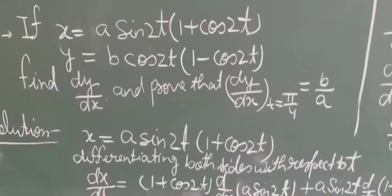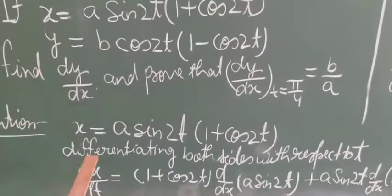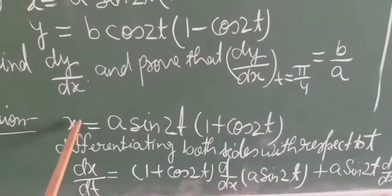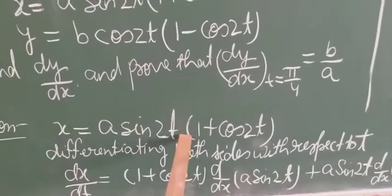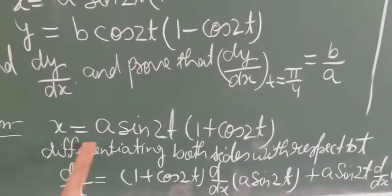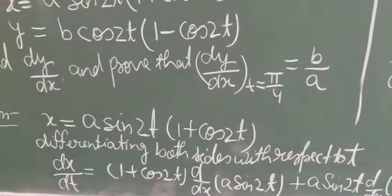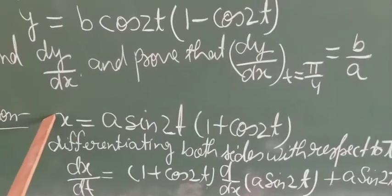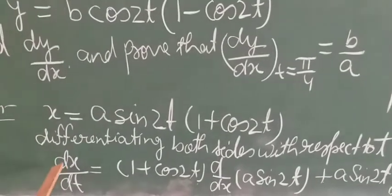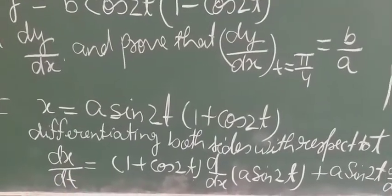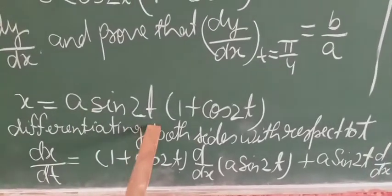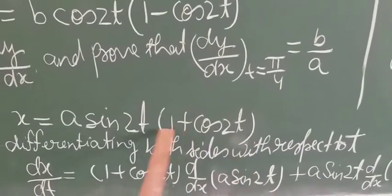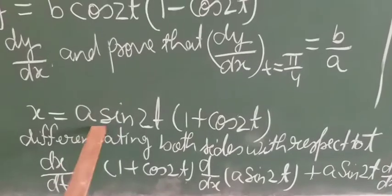To solve this, we first take x: x equals a·sin2t·(1 + cos2t). Since x depends on t, we differentiate both sides with respect to t to get dx/dt. There are two terms — a·sin2t and (1 + cos2t) — so we apply the product rule to find the derivative.